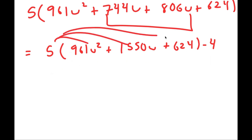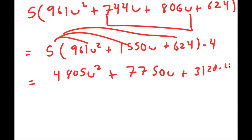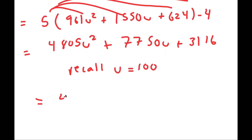Now I'm going to multiply all of these terms by 5. 5 times 961 is 4,805, and we have u squared. 5 times 1,550 is 7,750u. 5 times 624 is 3,120, and then minus 4, which gives 3,116. Now the last step is to plug in u equals 100. Since 100 squared is 10,000, multiplying by hundreds is simple.